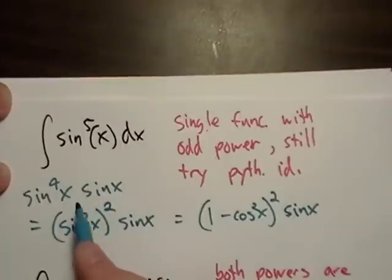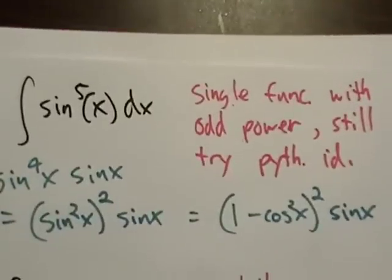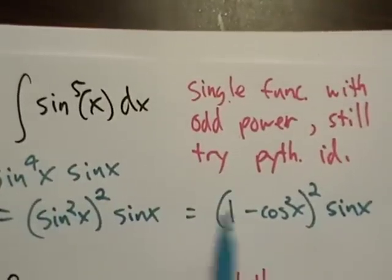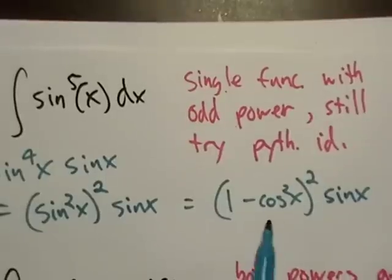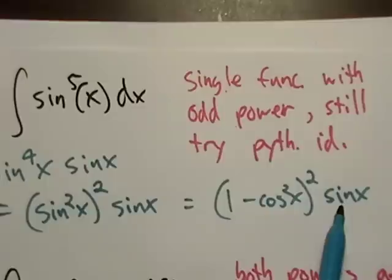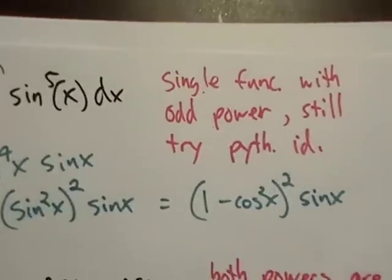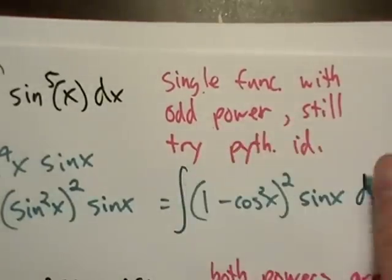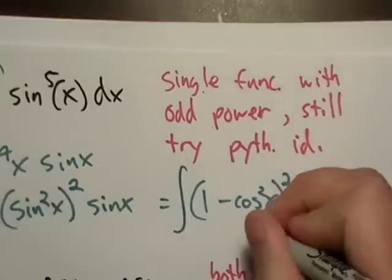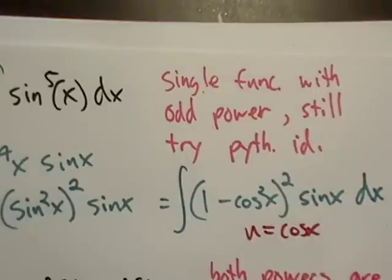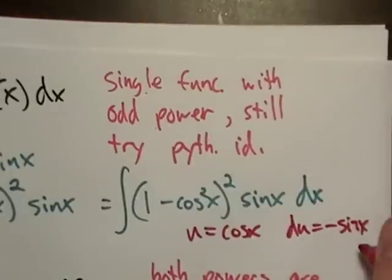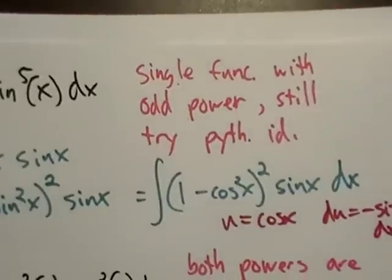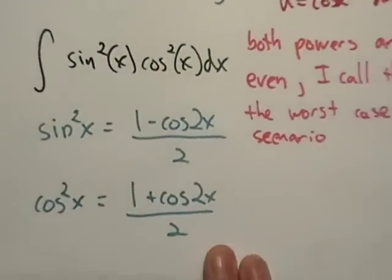Then from there you could use the Pythagorean identity again, one minus cosine squared x squared and then sine x. Notice I didn't rewrite the whole integral and everything. It's personal preference whether you want to go ahead and do that or not. Sometimes you'll do this and forget that you're even taking an integral. You want to be careful with that. Notice again I've got that trig function sitting out here. If I do want to take the integral, I can just let u equal cosine x and my du will be negative sine x dx.